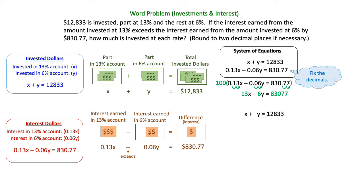Then I'm going to write my two equations again. My first equation is my invested dollars equation. My adjusted second equation doesn't have any decimals in it. And I'm going to use addition method to solve this. So the first thing I'm going to do is make some opposites.